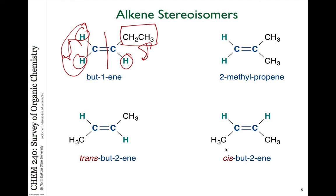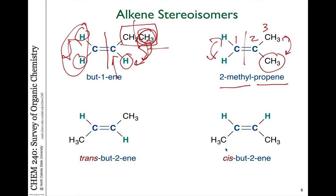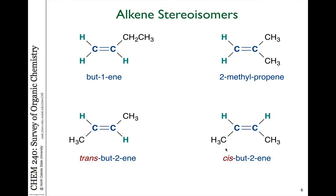Another constitutional isomer occurs when you take the CH3 group off the end and put it onto the central carbon, replacing that hydrogen — switching the CH3 and that hydrogen gives you 2-methylpropene: propene because it's a three-carbon chain with a methyl group off carbon 2. There are no possible stereoisomers here because both groups on each end of the double bond are identical. Another constitutional isomer occurs when we move the double bond to a different position in the chain — going from 1-butene, or but-1-ene, to 2-butene, or but-2-ene, where the double bond starts on carbon 2 and extends to carbon 3.